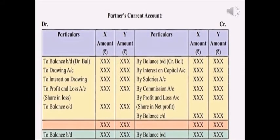The proforma of Partners Current Account is shown here. On the credit side: By Balance Brought Down if it shows credit balance, By Interest on Capital, By Salaries, By Commission, and By Profit and Loss Account if net profit is received. On the debit side: To Balance Brought Down if it shows a debit balance, To Drawings Account, To Interest on Drawings, and To Profit and Loss Account if net loss is incurred. Finally the Partners Current Account is closed and the balance is transferred to the Balance Sheet.